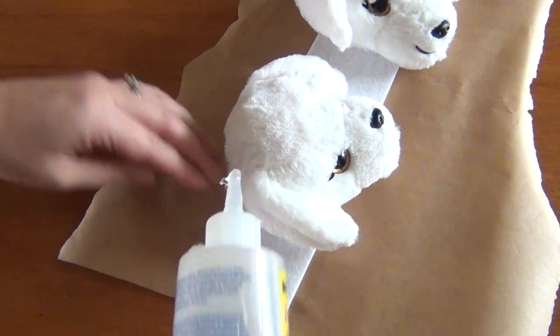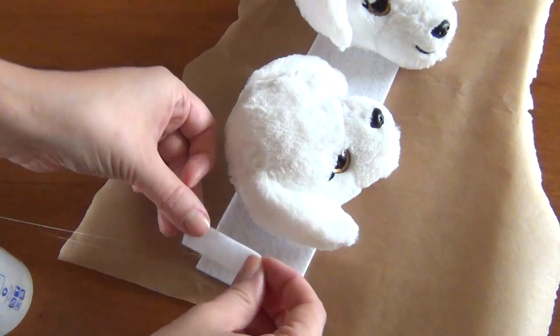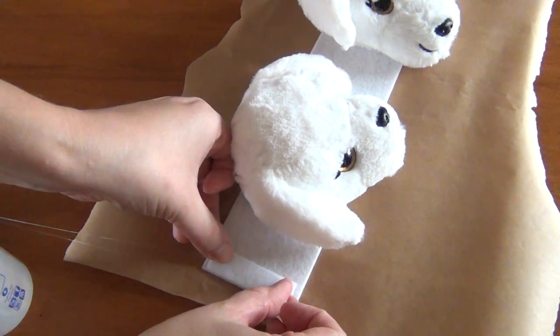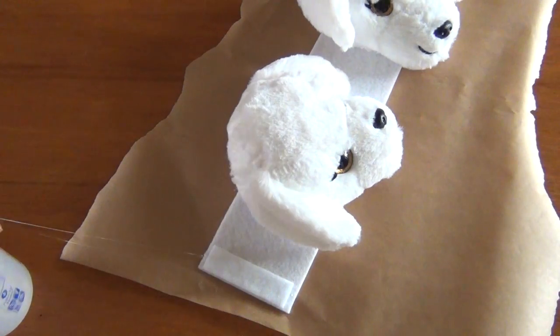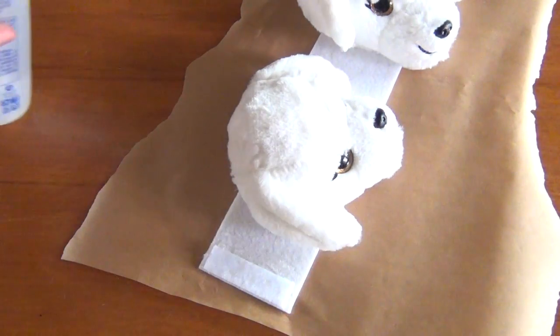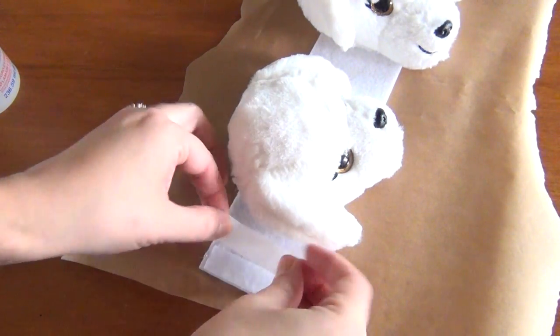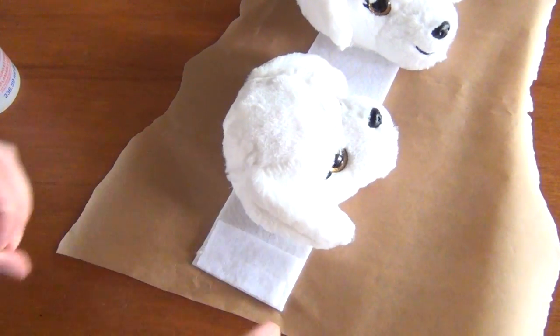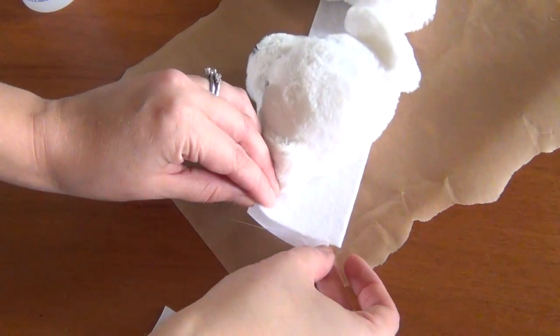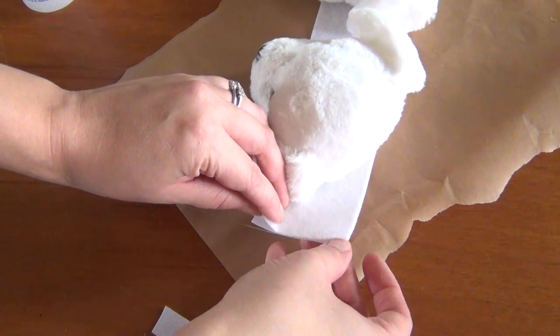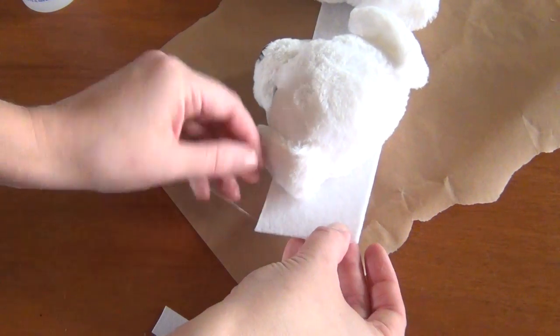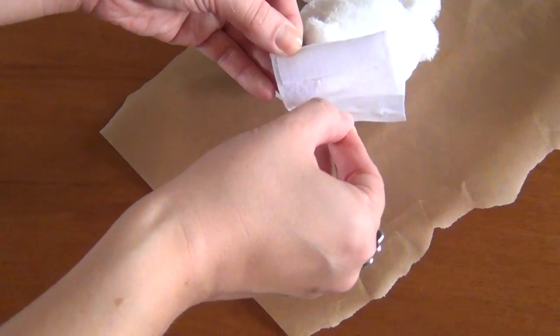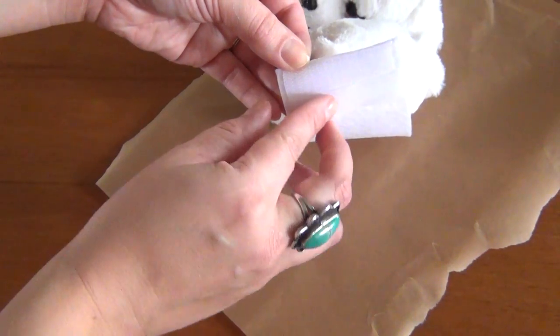And then you can start adding your velcro to the ends of the neck band. Just cut a piece to fit across and glue it into place. I like to do two pieces on each end and you'll want to make sure that you do each type on opposite sides. So one side will have hooks and one side will have loops. Make sure that you do one side facing up and one side facing down. Otherwise your velcro won't actually stick.